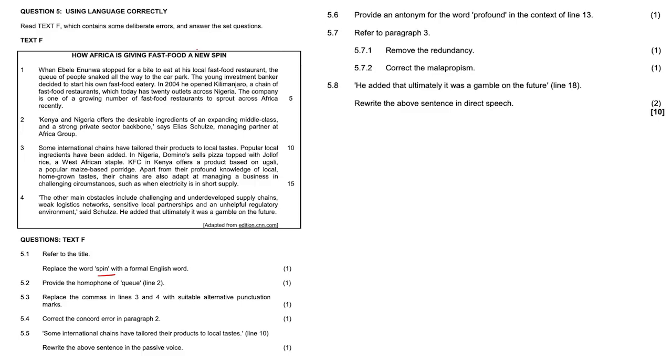5.2, provide the homophone of the word 'queue.' Homophone—so a word that sounds exactly the same but that's spelled differently. So we can go 'Q,' you know, like a pool cue.